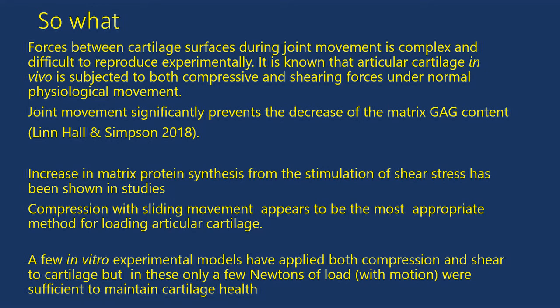So all this is really interesting, but so what? Why do you need to know it? The forces between two articulating bones are very complex. And it's very difficult to analyze them experimentally in a real-life situation, in an in vivo experiment. In vivo means in a living body. In vitro means in glass. So it's very difficult to reproduce a joint in a living situation. But we do know that cartilage in a living subject is subjected to compressive and shearing forces under normal movements. And we now seem to believe that these two forces are very important in maintaining the proportions of GAG molecules in our cartilage. If we take away these shearing and compressive forces, the cartilage effectively starts to die.